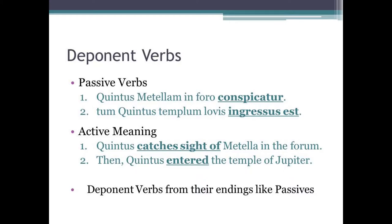So the sentences we just looked at would be translated as: 'Quintus catches sight of Metella in the forum,' and 'then Quintus entered the temple of Jupiter.' And as we're about to find out, deponent verbs form their endings exactly like the passive.